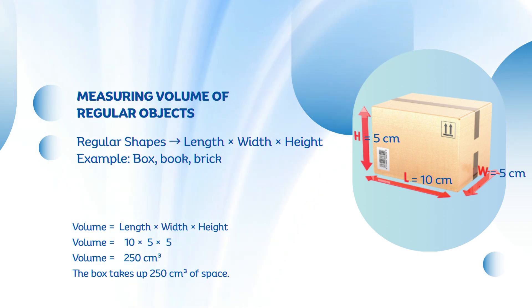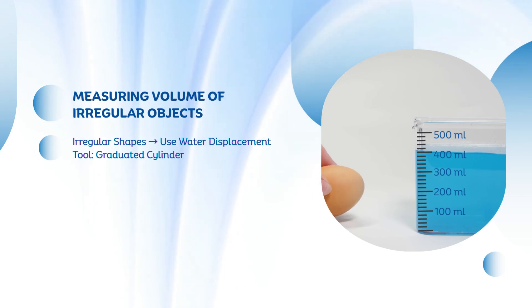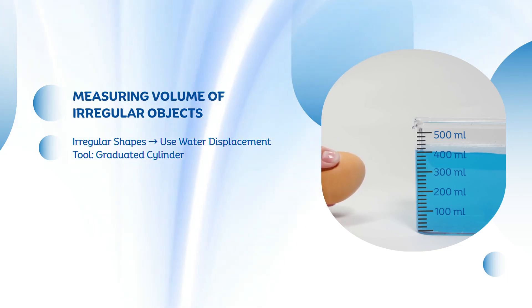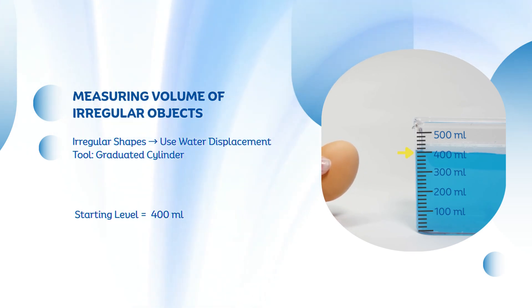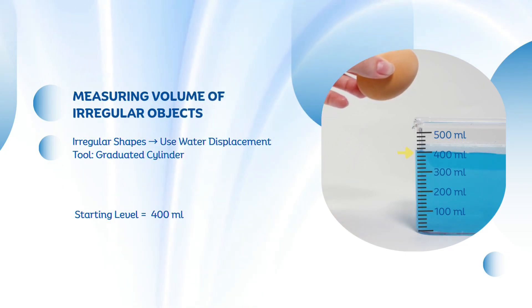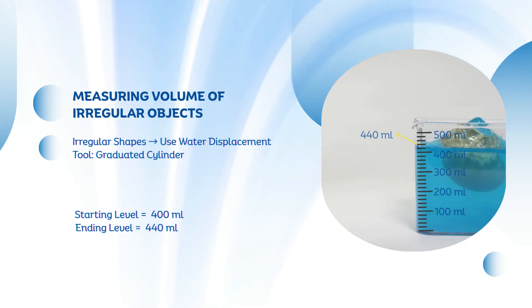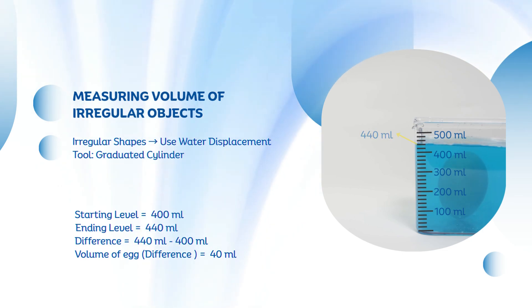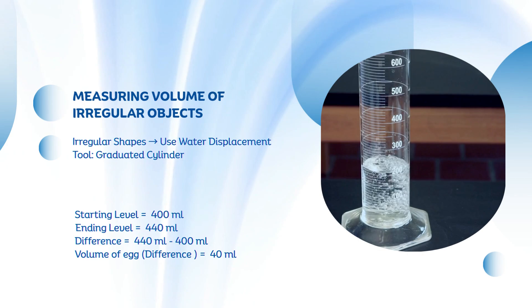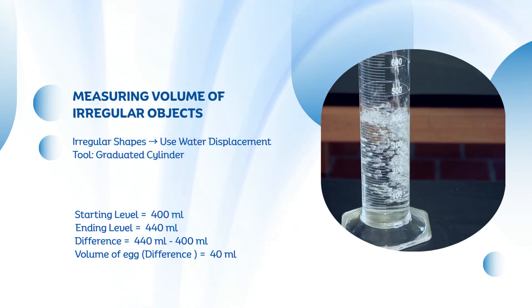But not everything we measure has flat sides. How do we find the volume of something like a rock or a marble? For irregular objects, we can use the water displacement method, and a simple measuring cup works great for this. Fill the measuring cup with water and record the starting level — for example, 400 milliliters. Gently place the object into the cup. The water level rises; let's say it goes up to 440 milliliters. The difference — 440 minus 400 — shows the object's volume: 40 milliliters. In a science lab we usually use a graduated cylinder for more precise readings, but the measuring cup demonstrates the same idea perfectly.